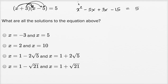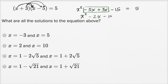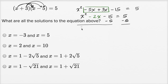Let's see what we can do from here. This is going to be x squared, and then these two terms we can add together: negative 5x plus 3x is negative 2x, and then we have minus 15 is equal to 5. We can now subtract 5 from both sides, and we would get x squared minus 2x minus 20 is equal to zero.